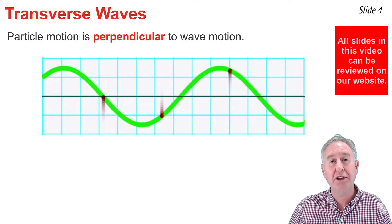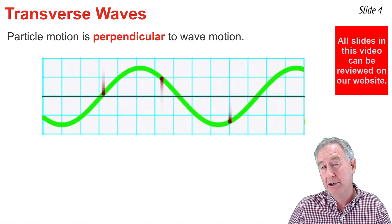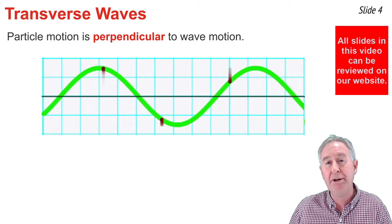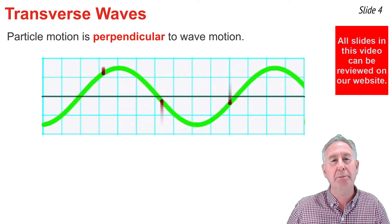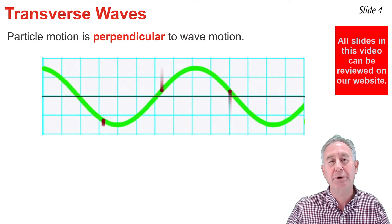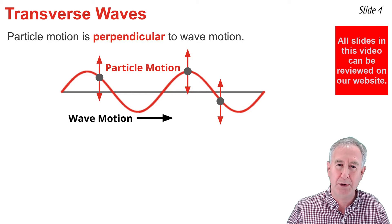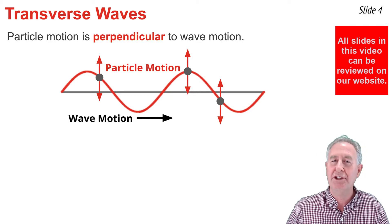In this animation, the three dots represent three of the many particles in the medium. And you'll notice each one is vibrating up and down vertically about its fixed position. But the pattern of crests and troughs is moving from the left to the right. The direction of wave motion is perpendicular to the direction of the particle motion.